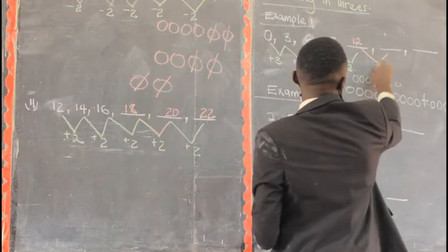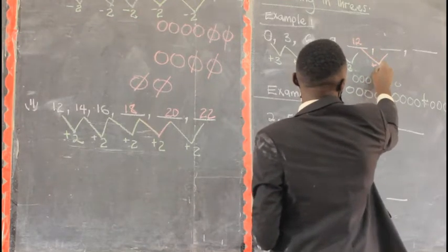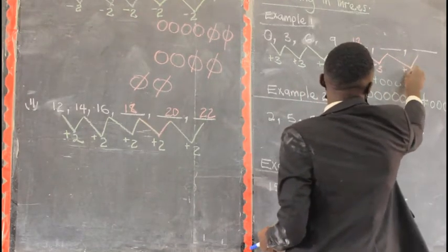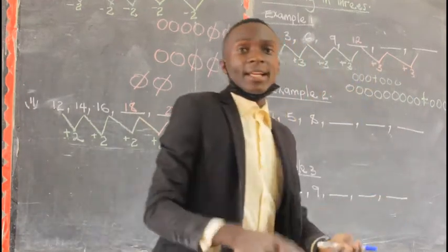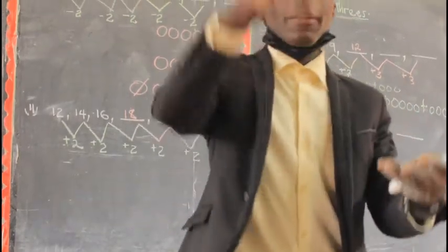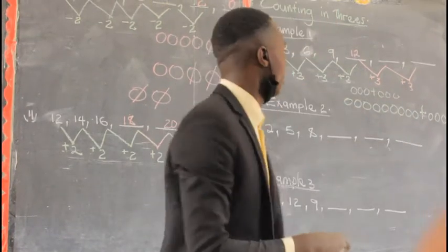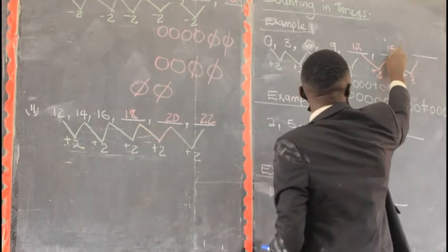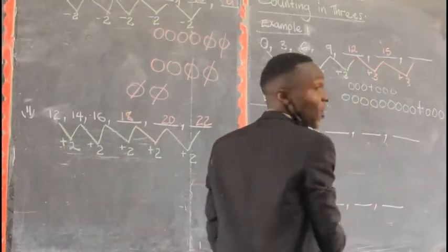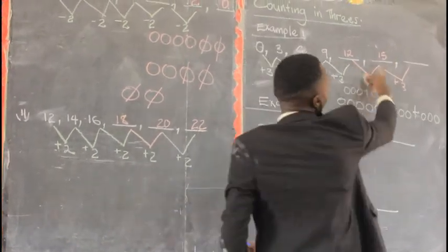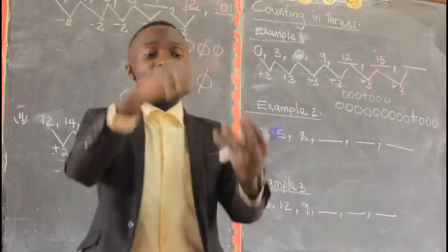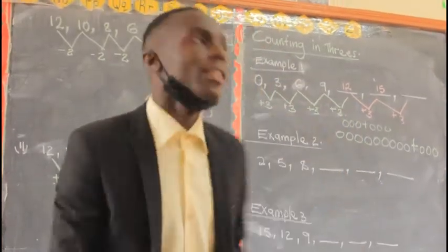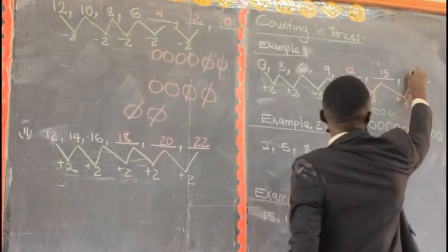Continue adding three in the sequence. Twelve plus three gives fifteen. Fifteen plus three gives eighteen. Don't forget to do your working. We get eighteen.